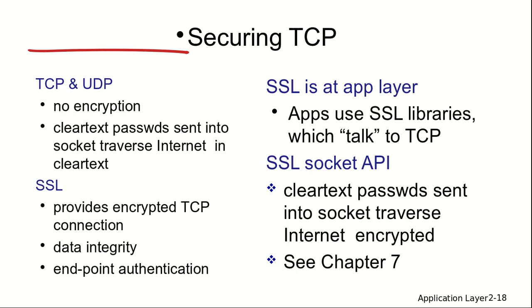How do you secure TCP? TCP does not provide security by default. We secure TCP and UDP by using the Secure Socket Layer — SSL — which provides encryption, data integrity, and endpoint authentication. SSL operates at the application layer; the application uses SSL libraries which in turn talk to TCP at the transport layer. Chapter seven of the sixth edition covers network security in depth. That brings us to the end of this lecture — any questions can be discussed in the live session.